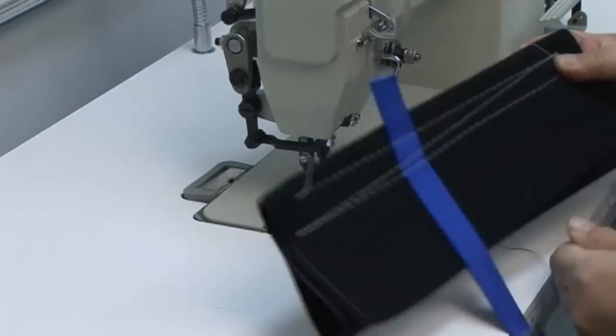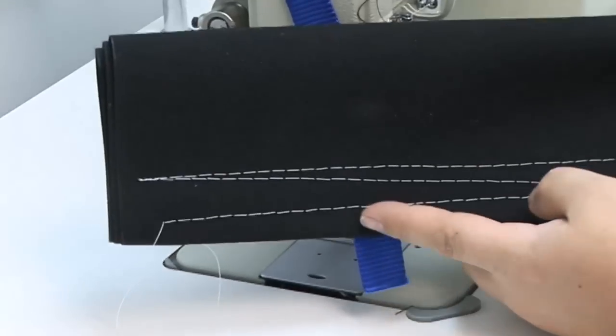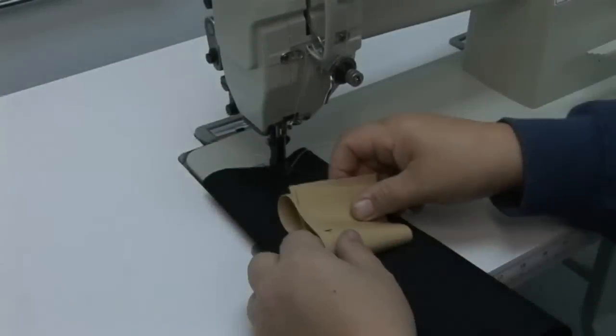Look at that stitch. This is a compound walking foot sewing machine capable of an 8mm long straight stitch. Let's take a look at that fabric. No skip stitches on the top side and the bottom side is nice and neat. Good stitch tension. We're using a V92 thread.